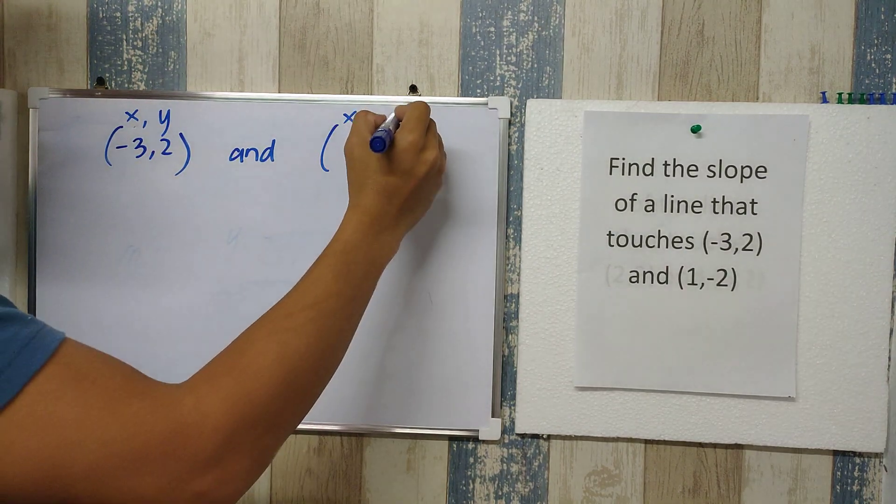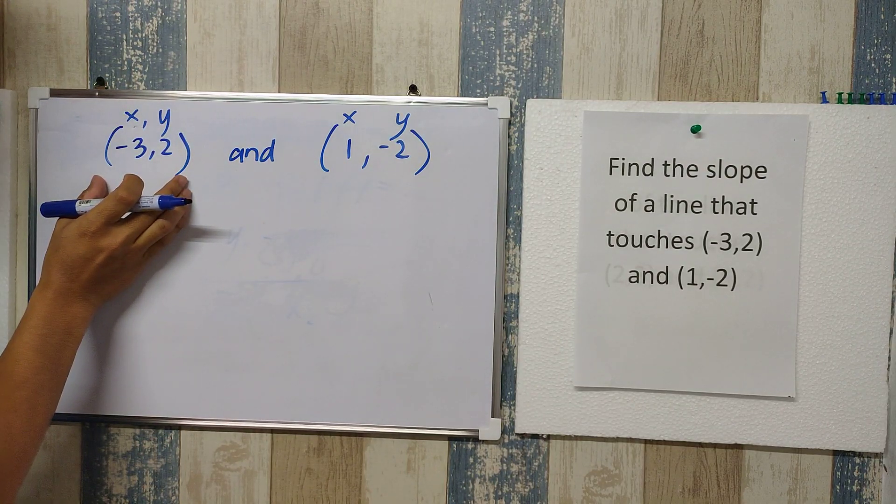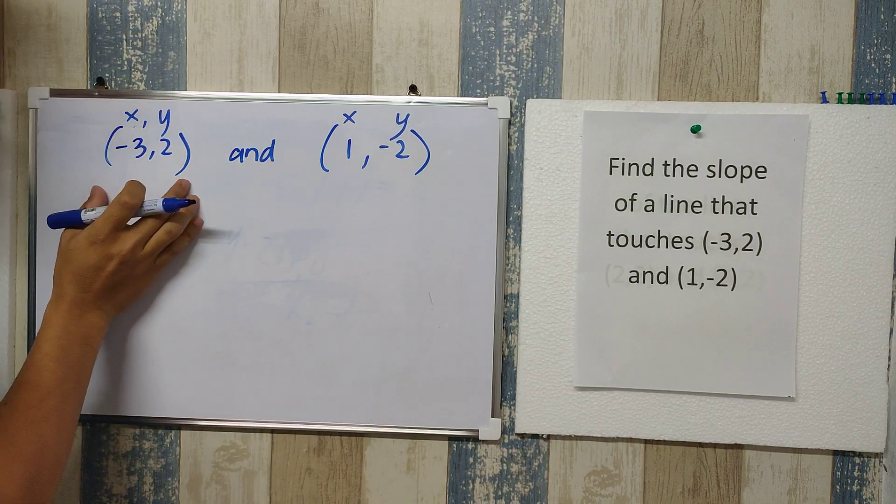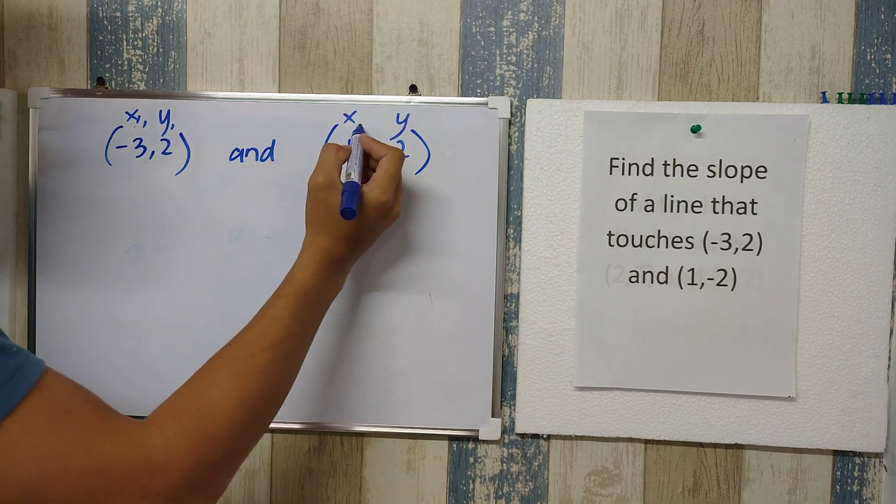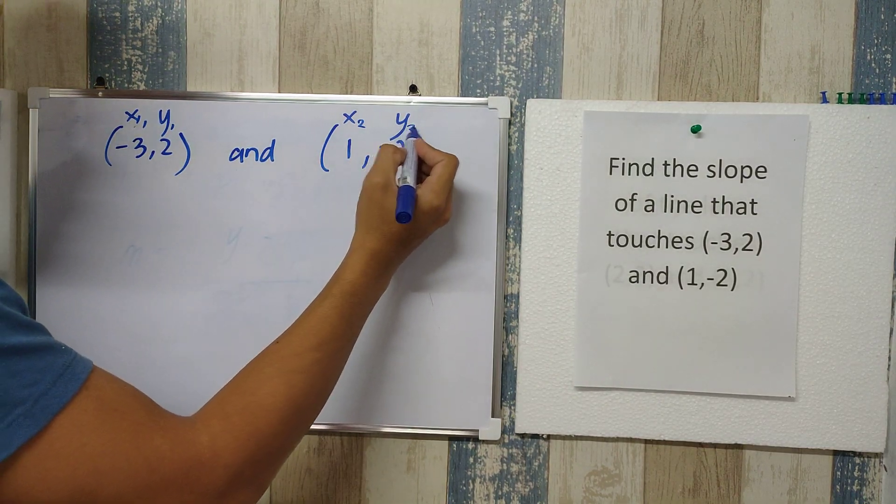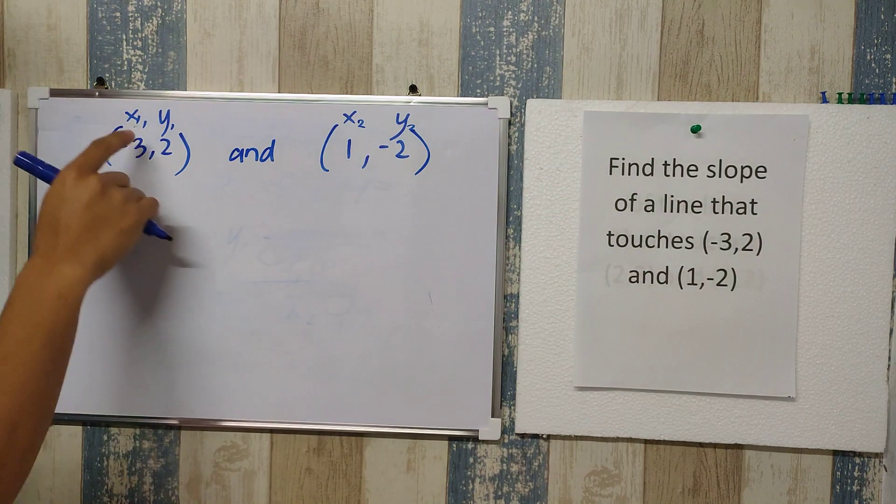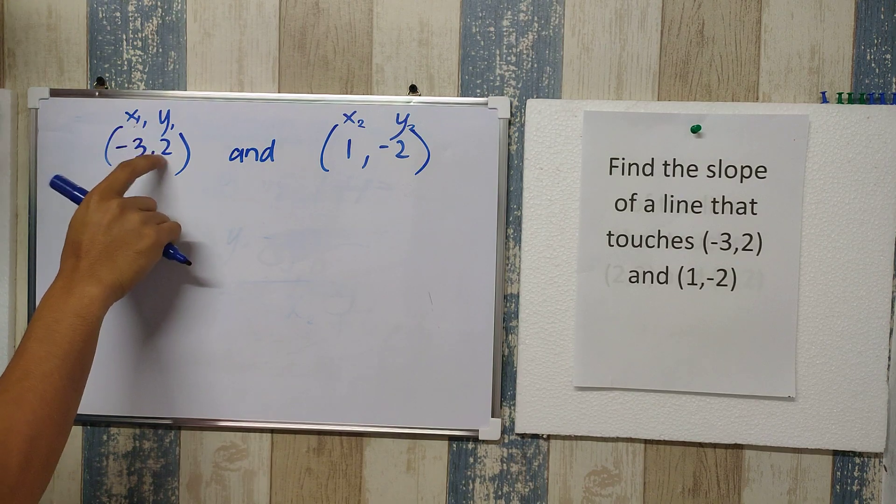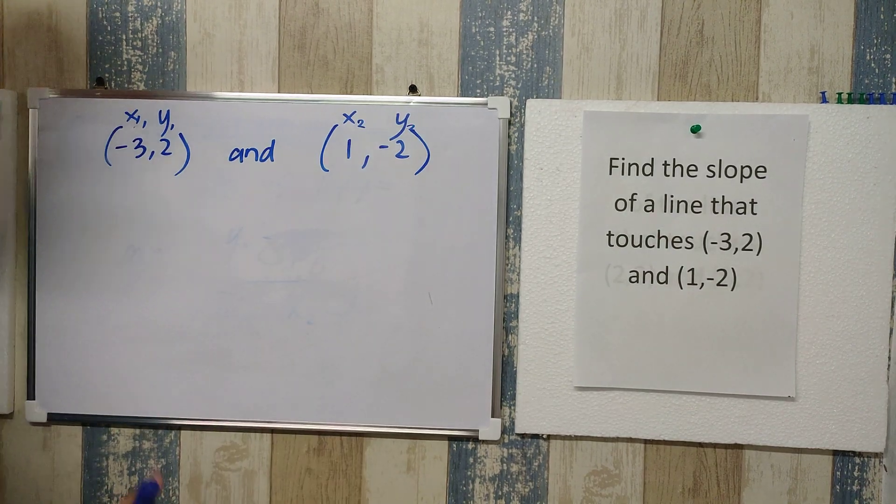This is also x and this is also y. So choose between negative 3 and 2, and 1 negative 2. Whichever you want to be the first point, assign 1 there. If this is the one you want to be the second point, assign 2 on the subscript. In this case, my x sub 1 is negative 3, y sub 1 is 2, x sub 2 is 1, y sub 2 is negative 2.